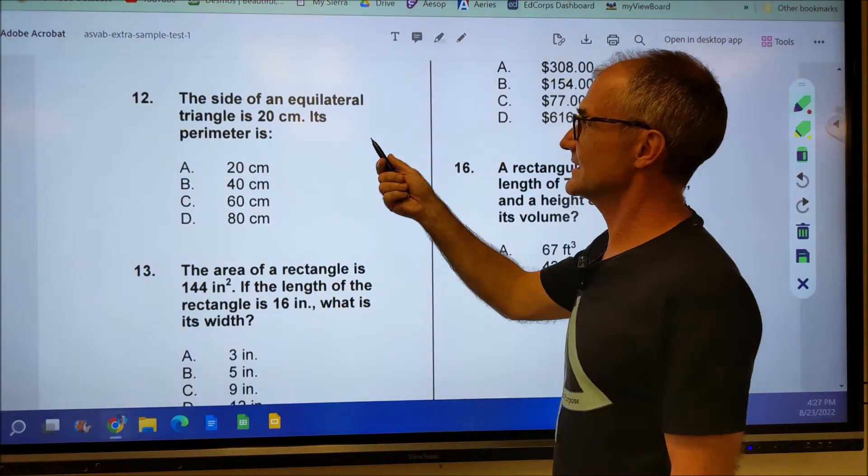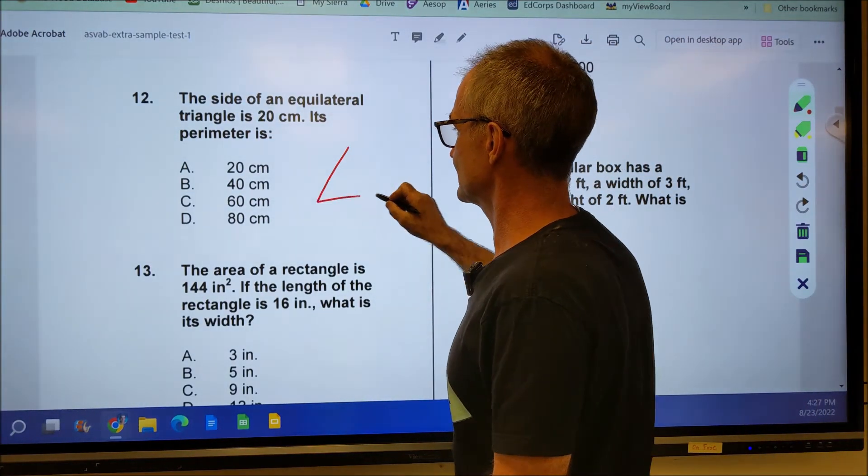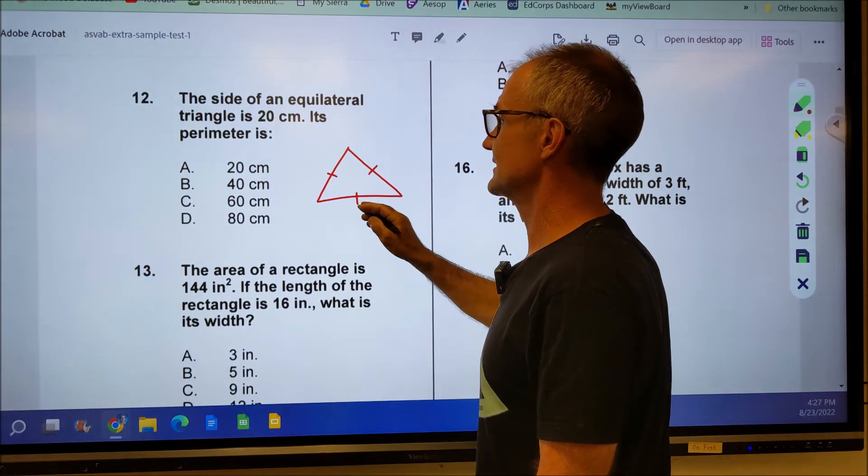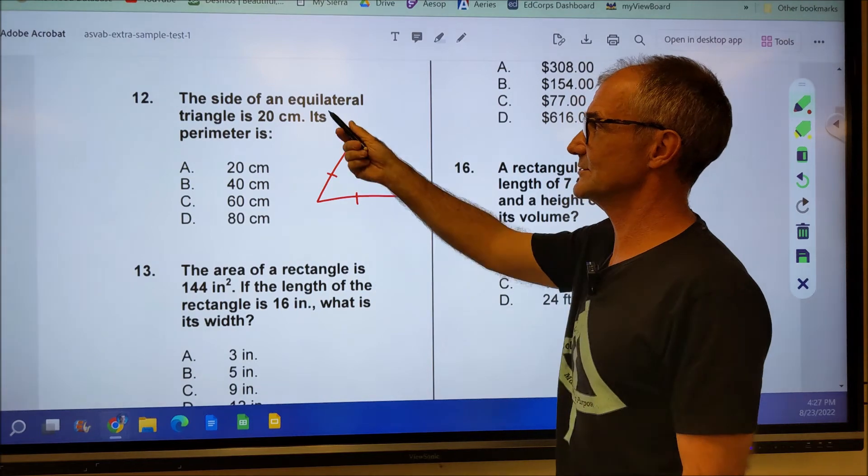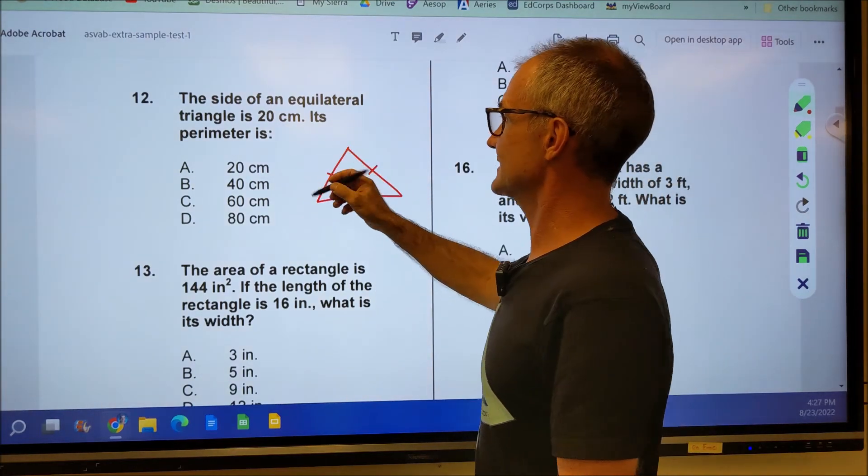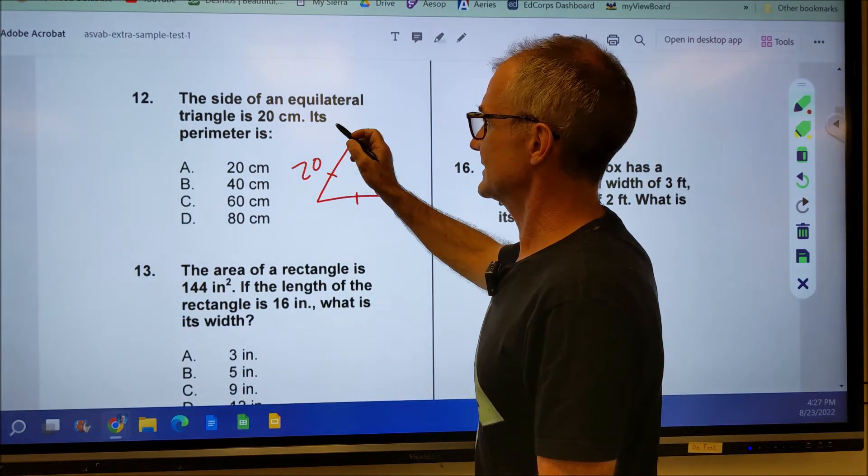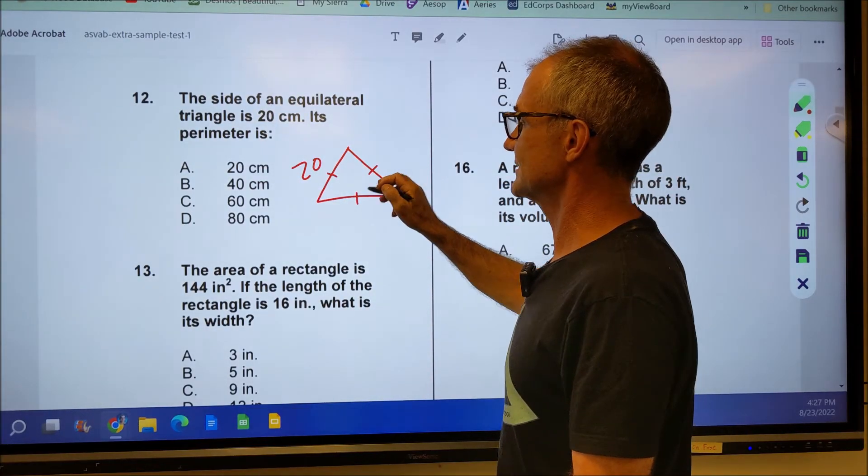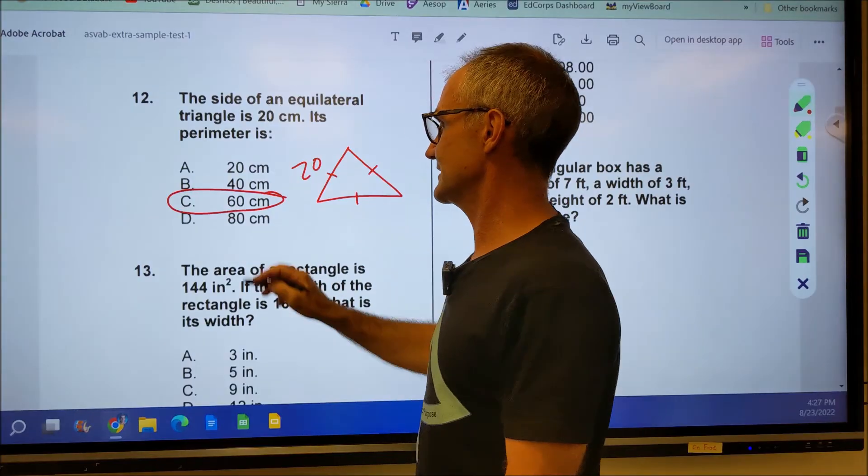Number 12, the side of an equilateral triangle. Equilateral, lat means side, equal means the same. So all three of these are the same. Again, kind of a vocab question if you know what equilateral means. One side is 20 centimeters. Its perimeter, the distance all the way around the outside is 20 plus 20 plus 20 or 60 centimeters right there.